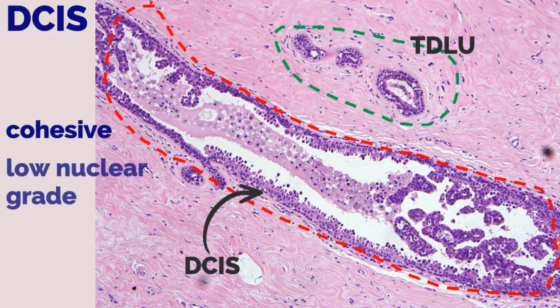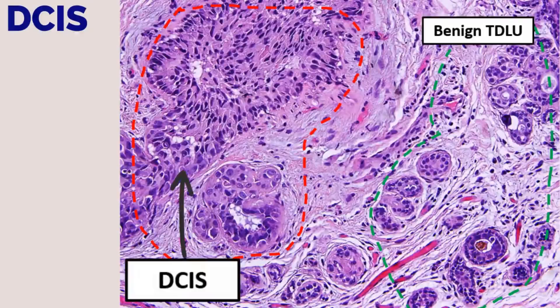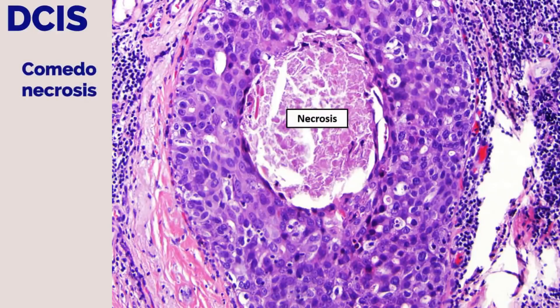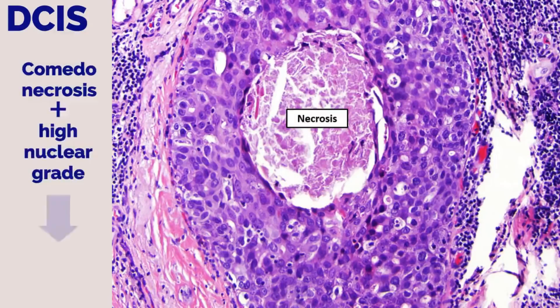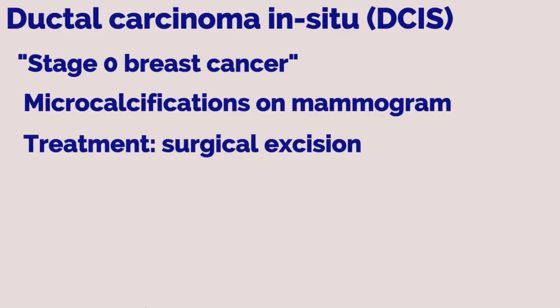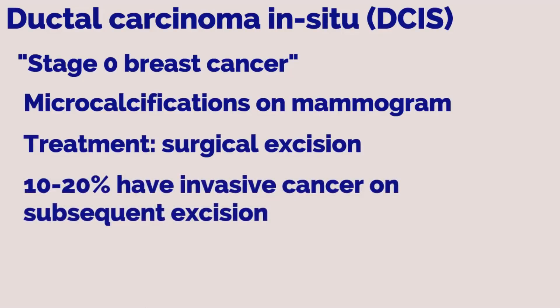In low-grade DCIS, cells are low nuclear grade and homogeneous. Higher-grade DCIS lesions show variability in cell size and prominent nucleoli. Comedonecrosis is when there is a necrotic core in the center of a duct filled with cancer cells. High nuclear grading and the presence of comedonecrosis increase recurrence risk. Treatment is surgical excision; when found on core biopsy, 10–20% of patients will have invasive cancer on subsequent excision.